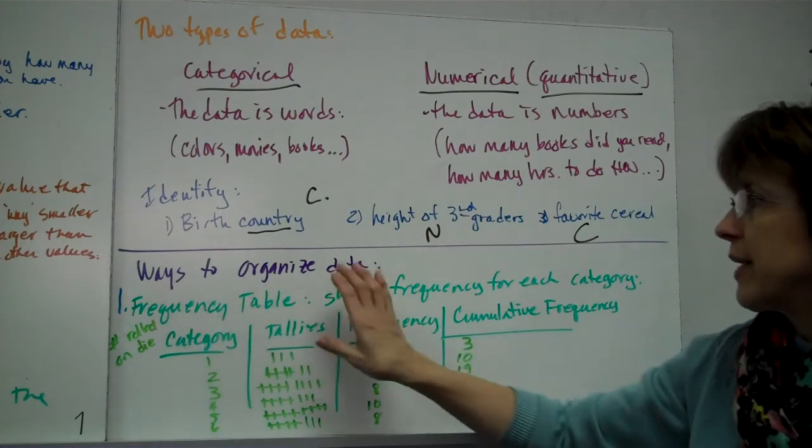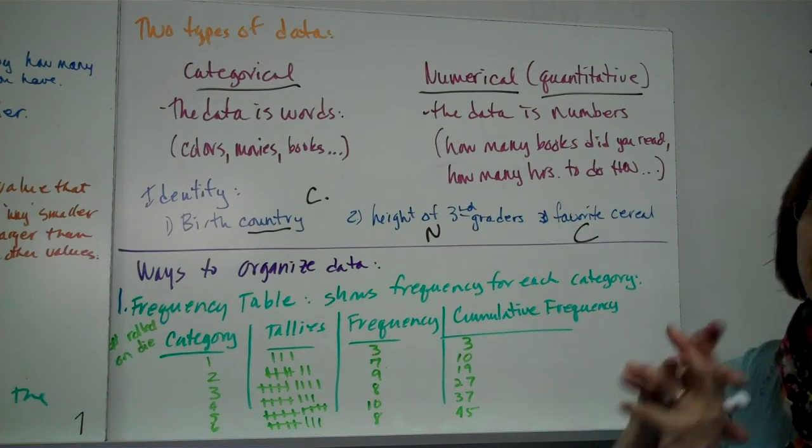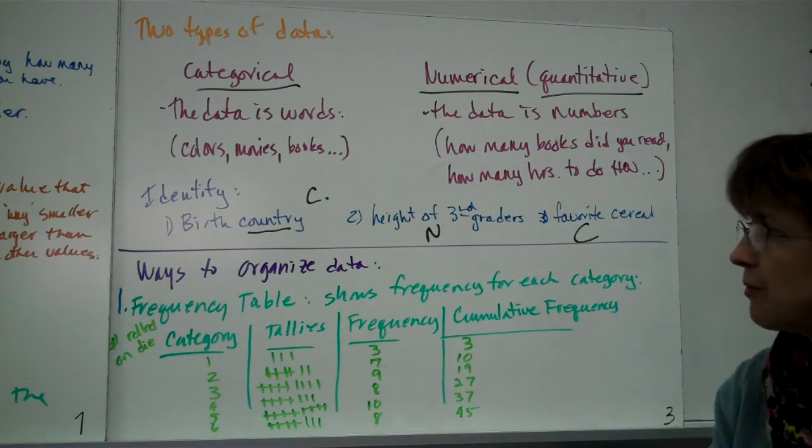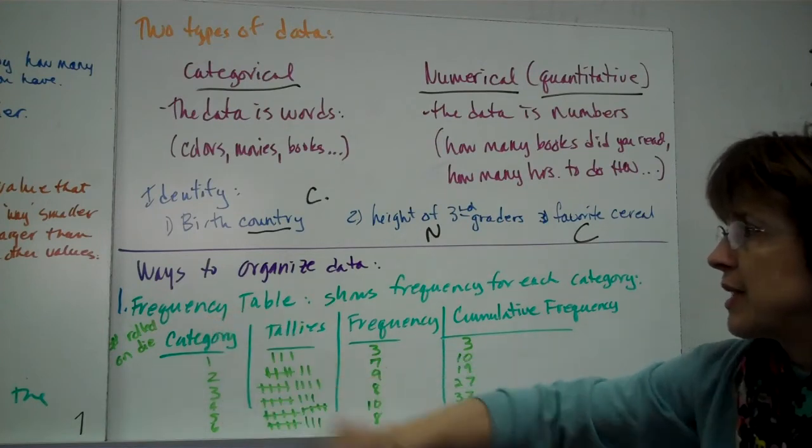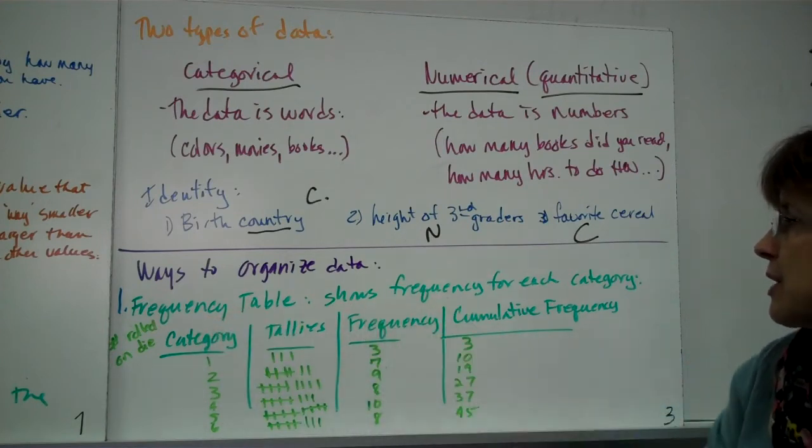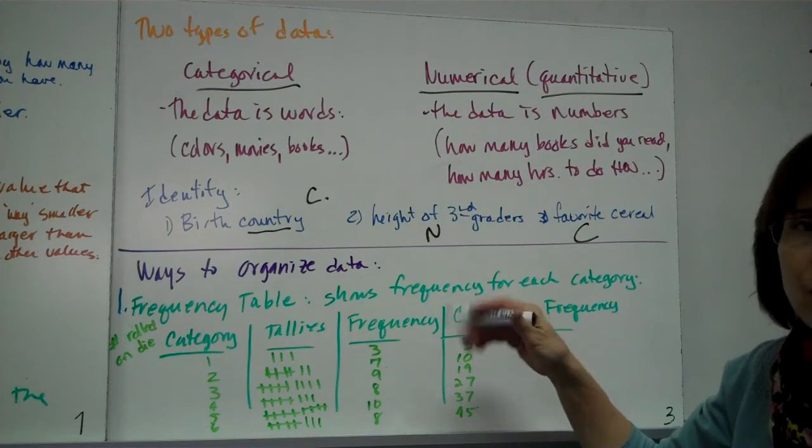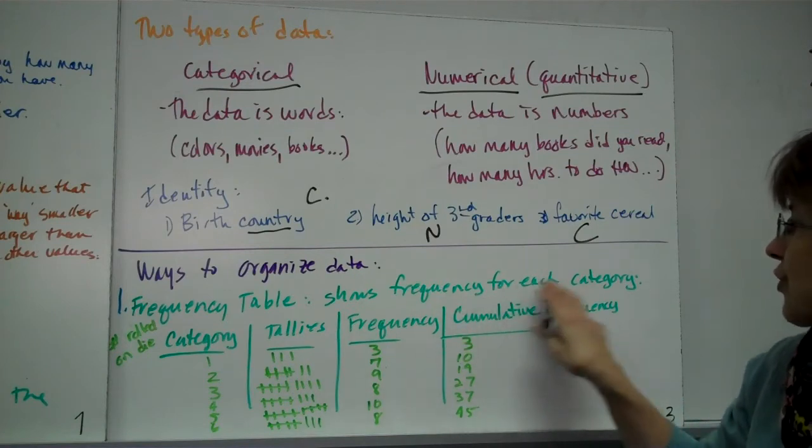Another thing. Ways to organize data. There's several, many, many, many ways to organize data. We're going to go over a couple of them, and some you've already done, so it'll sound a little familiar. One is called a frequency table. Now, that shows a frequency, which frequency just means how many times something shows up, how often, for each category.